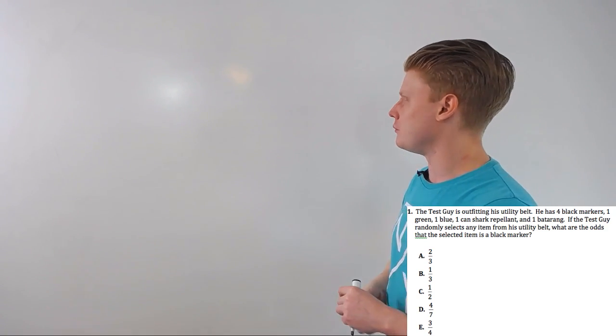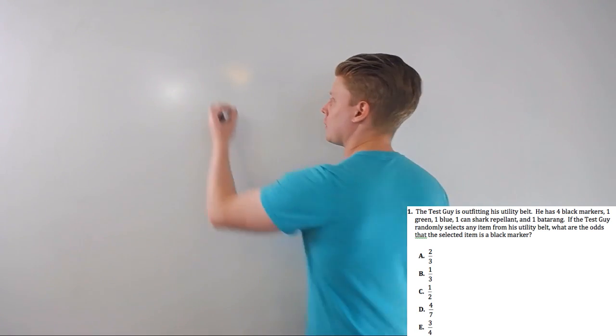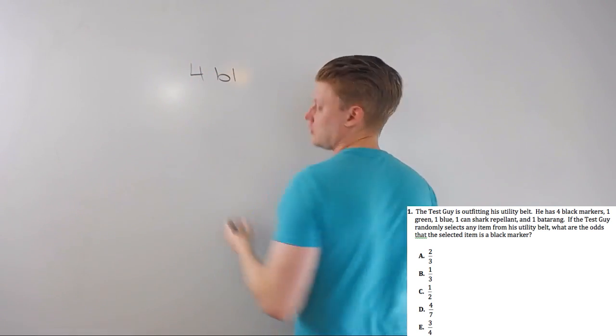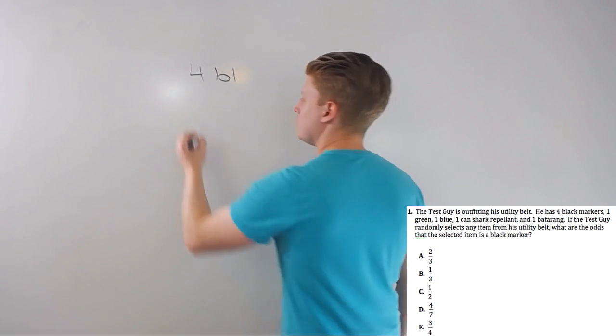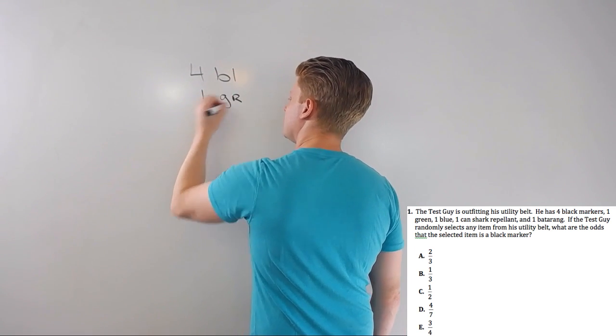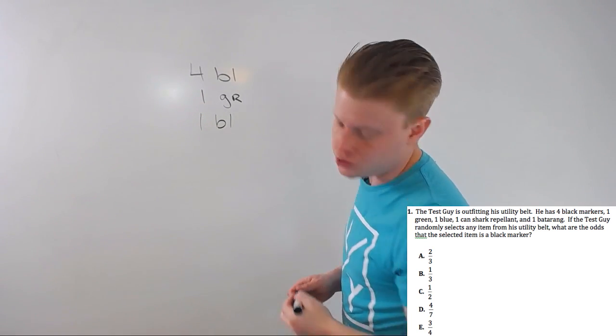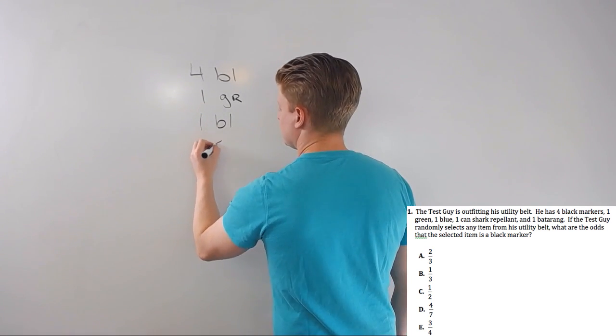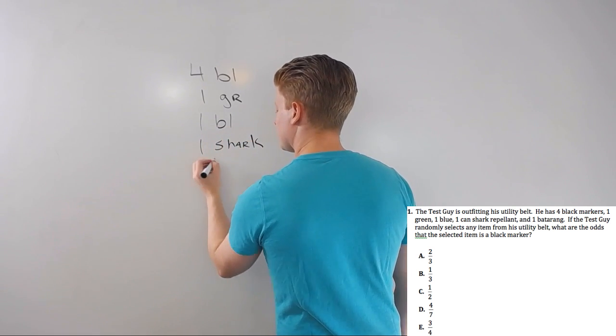Let's look at a problem. I'm outfitting a utility belt: I have four black markers, one green marker, one blue marker, a can of shark repellent, and a batarang—some old Batman references.